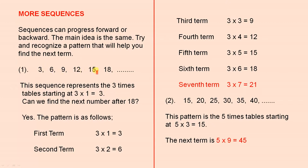Number one, we have this sequence here. The sequence represents the three times tables starting at three times one equals three. Can we find the next number after eighteen? Yes, the pattern is as follows.